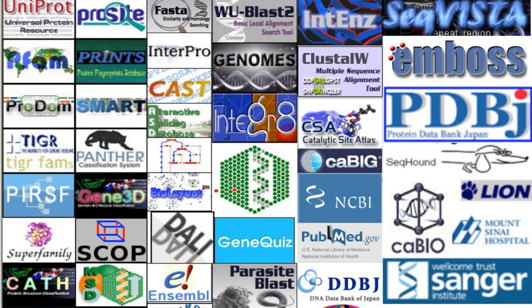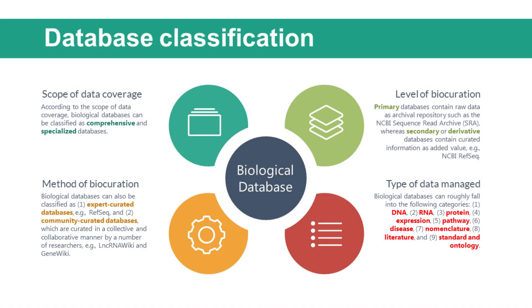According to a 2014 report of the molecular biology database collection in the journal Nucleic Acids Research, there are a sum of 1,552 databases that are publicly accessible online. This does not include online services without publication in peer-reviewed journals or those developed by commercial companies, so the actual number could well exceed this number. Considering the continuously proliferating number of biological databases, it becomes increasingly daunting and time-consuming to navigate the huge volume of databases of interest.